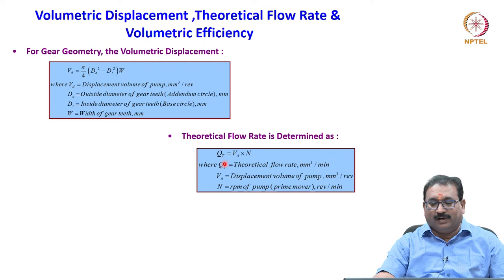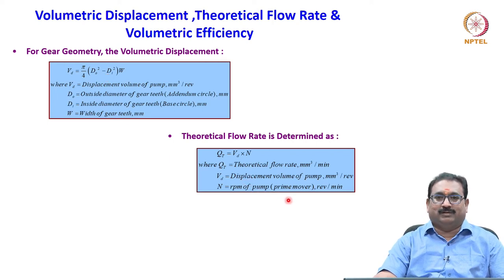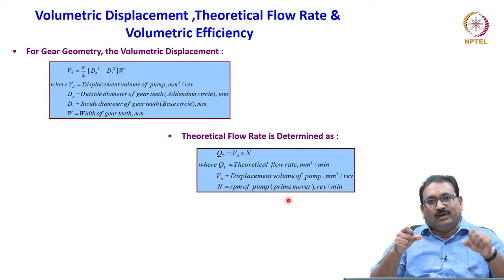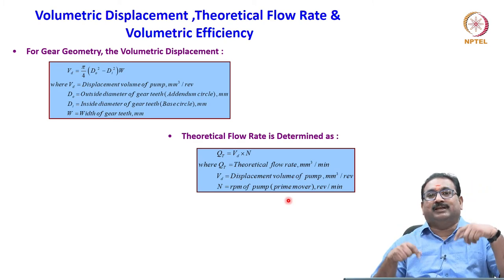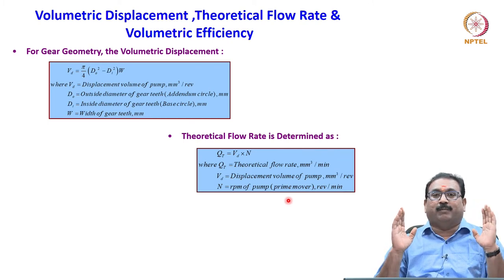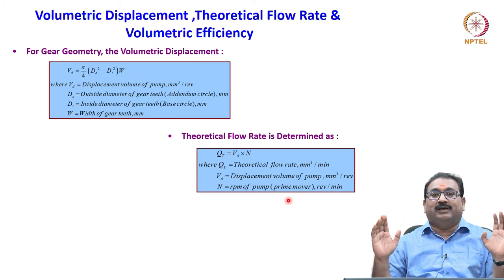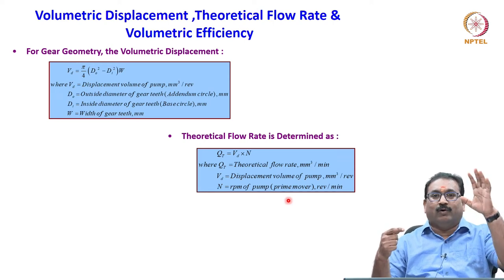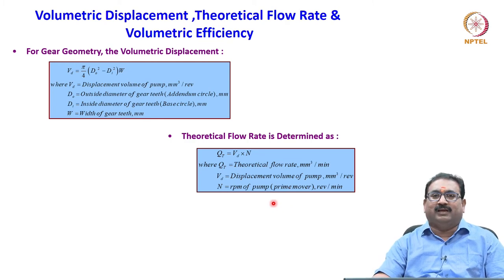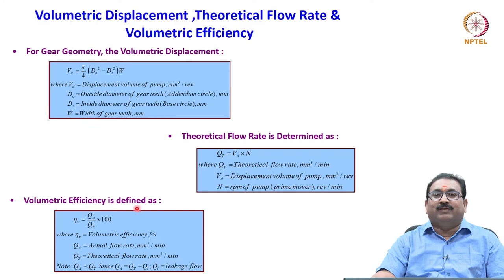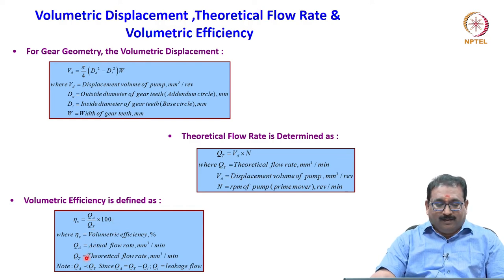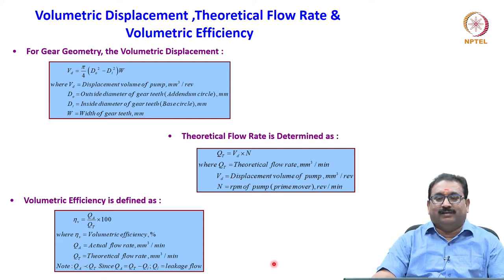Theoretical flow rate is calculated as Qt = Vd × N, where Vd is the displacement volume and N is the RPM of the motor. For one revolution, a fixed quantity is displaced — flow rate increases or decreases by rotating the shaft, but one revolution displacement remains the same. That is why gear pumps are always positive displacement pumps — no variability is available. Volumetric efficiency is defined as QA by QT × 100%. QA is always less than theoretical flow due to leakage from the gap provided in the mating elements.